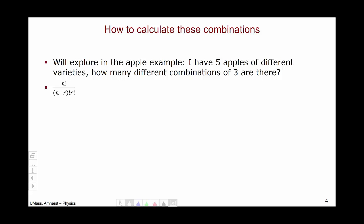The way to calculate the number of combinations is given by the formula N factorial over N minus R factorial, R factorial. Where N is the number of objects in total, in this case five for the five apples, and R is the number of objects in your subgroup, in this case three, because I want three apples.